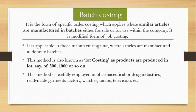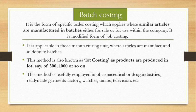Next is batch costing. In batch costing, the same type of articles are divided into different batches — for example, in one place the motherboard is being made, somewhere else the wiring is being made, somewhere the buttons are being made. All of these are costed separately in their batches and then assembled together into one product. Batch costing is used in drug industries, ready-made garments factories, radios, and televisions. It is also called lot costing because work is done in lots.